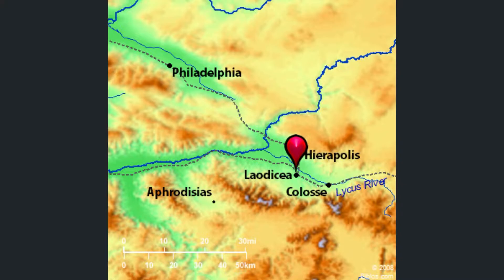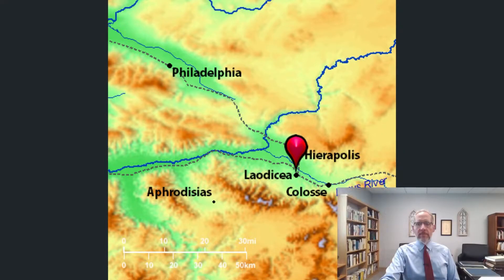This closer map again shows the Lycus River with Colossae, Laodicea, and Hierapolis. Those are the cities that surround Colossae. The main road goes right from there to Ephesus — Paul did not travel that road because he didn't go to Colossae, but many people did, which is one of the reasons Colossae has some value.